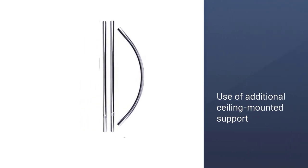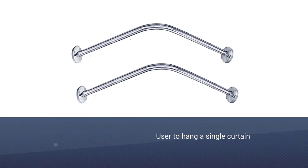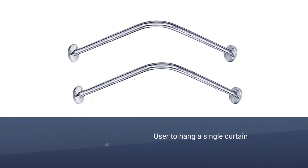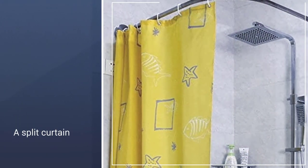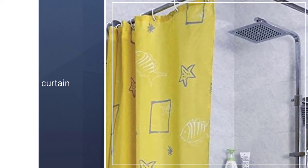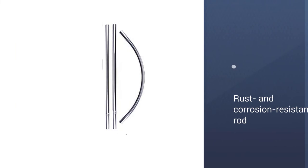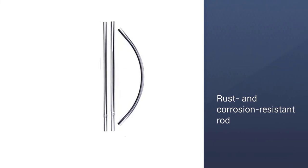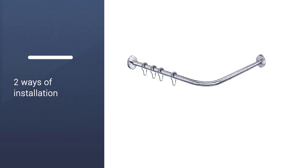The rod itself does not call for the use of additional ceiling mount supports as some L-shaped rods do. This permits the users to hang a single curtain rather than a split curtain, which is necessary with a ceiling support. The rust and corrosion resistant rod is suitable for all types of shower walls.